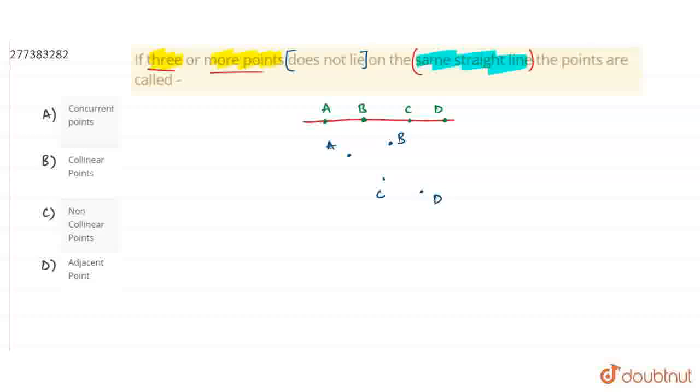If all points lie on the same line, then we say collinear points. But if they do not lie on the same line, then we say non-collinear points. Non-collinear points.